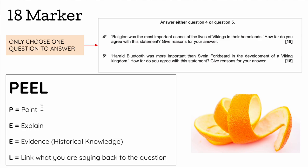In each paragraph, make your point, explain it, and include lots of historical knowledge because this is a history exam. At the end of each paragraph, link back to your argument — say something like 'therefore, I think this because...' and go back to what you said in your introduction. Keep going back to the question — that's really, really crucial.